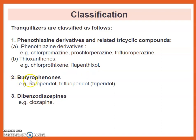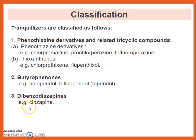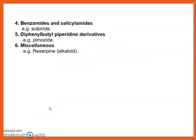Second class: Butyrophenones, for example, Haloperidol and Trifluoperidol, which is also called Triperidol. Next class: Dibenzodiazepines, for example, Clozapine. Next class: Benzamide and Salicylamide, for example, Sulpiride.